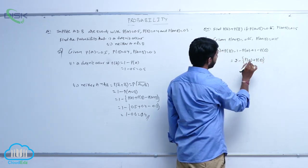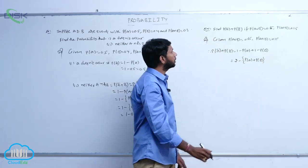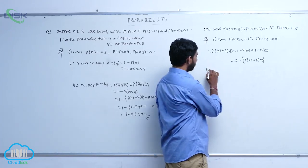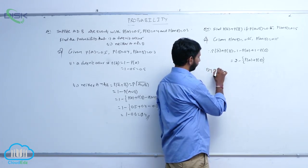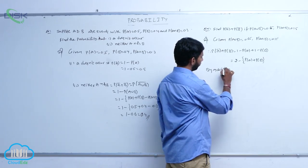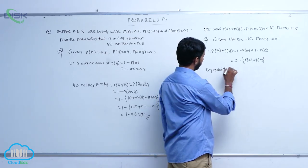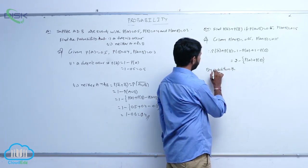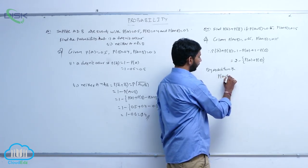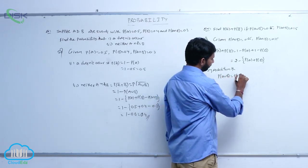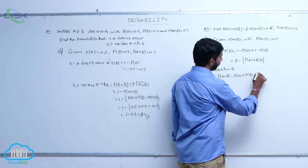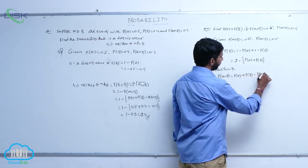2 minus of P of A plus P of B. By using the addition theorem: P of A union B is equal to P of A plus P of B minus P of A intersection B.